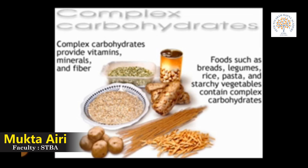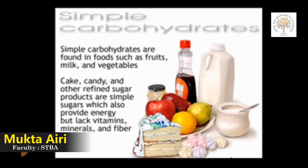Food such as bread, legumes, rice, pasta, starch and vegetables contain complex carbohydrates. Simple carbohydrates are known as simple sugars. They are found in foods such as fruit, milk and vegetables. Cakes, candies and other refined sugar products are simple sugars which also provide energy but lack vitamins, minerals and fiber. Glucose is also a simple carbohydrate and is the basic source of energy for all living things.